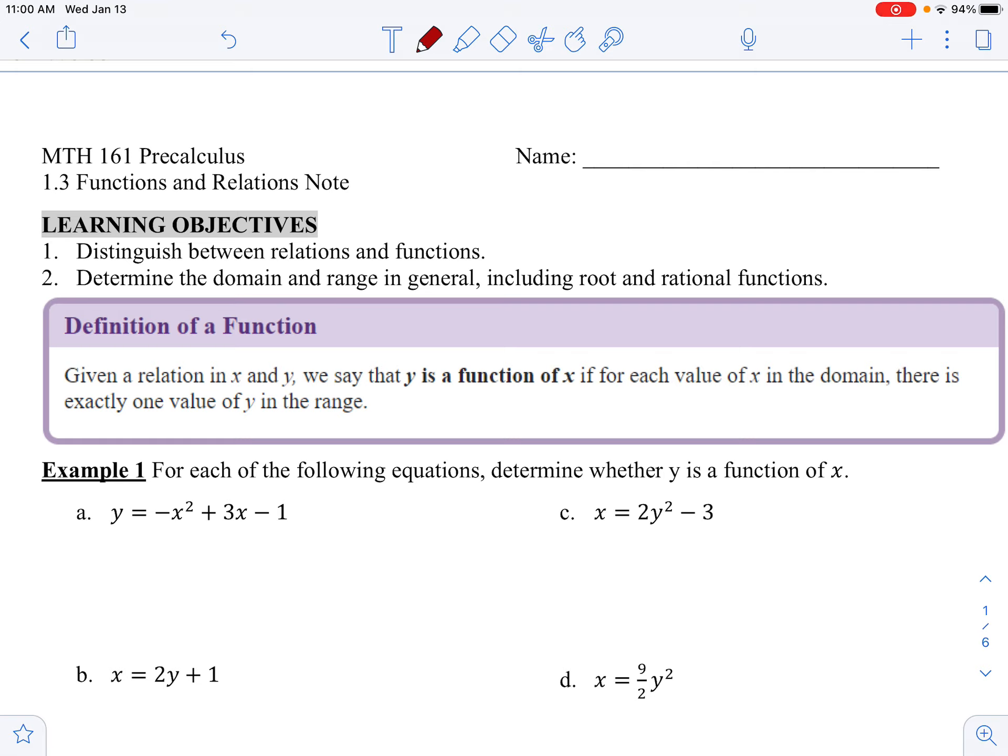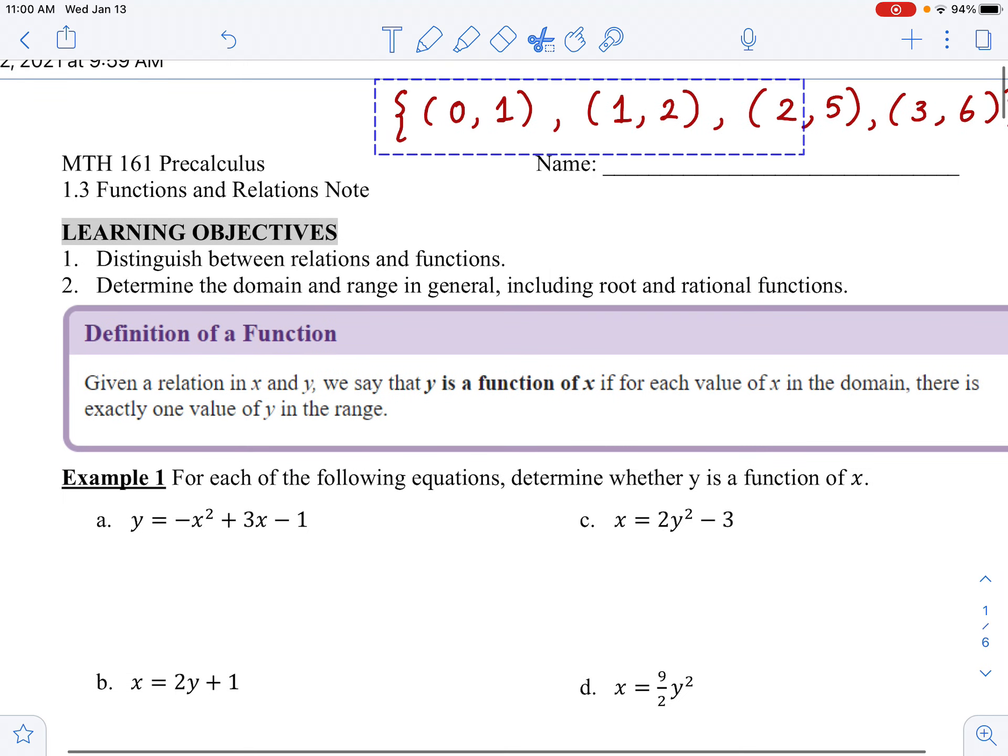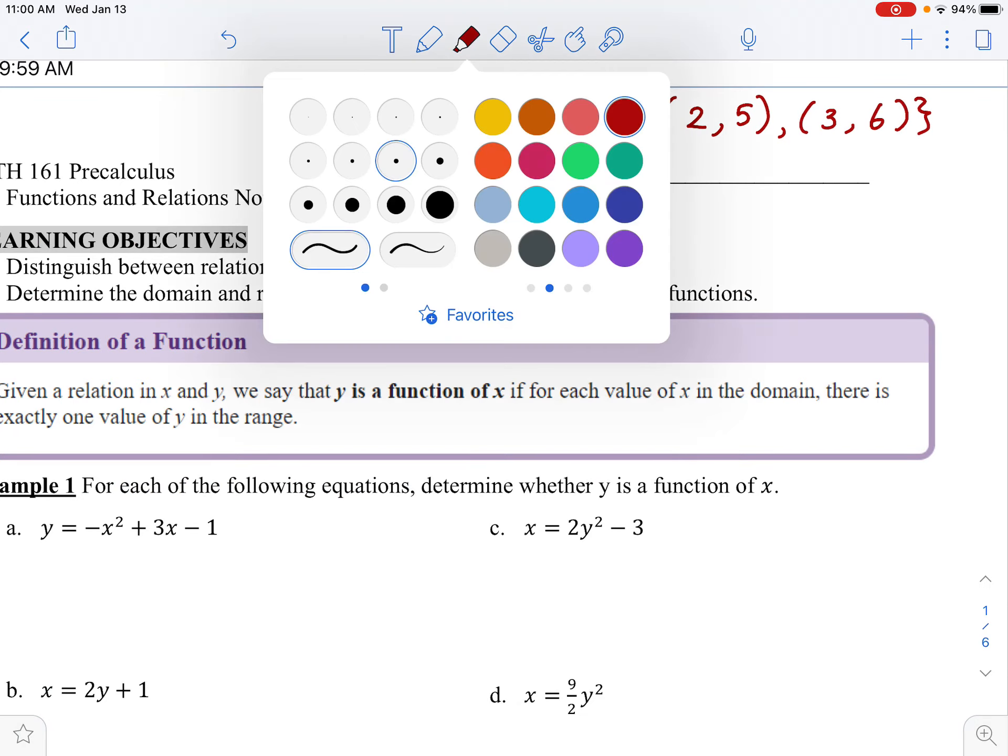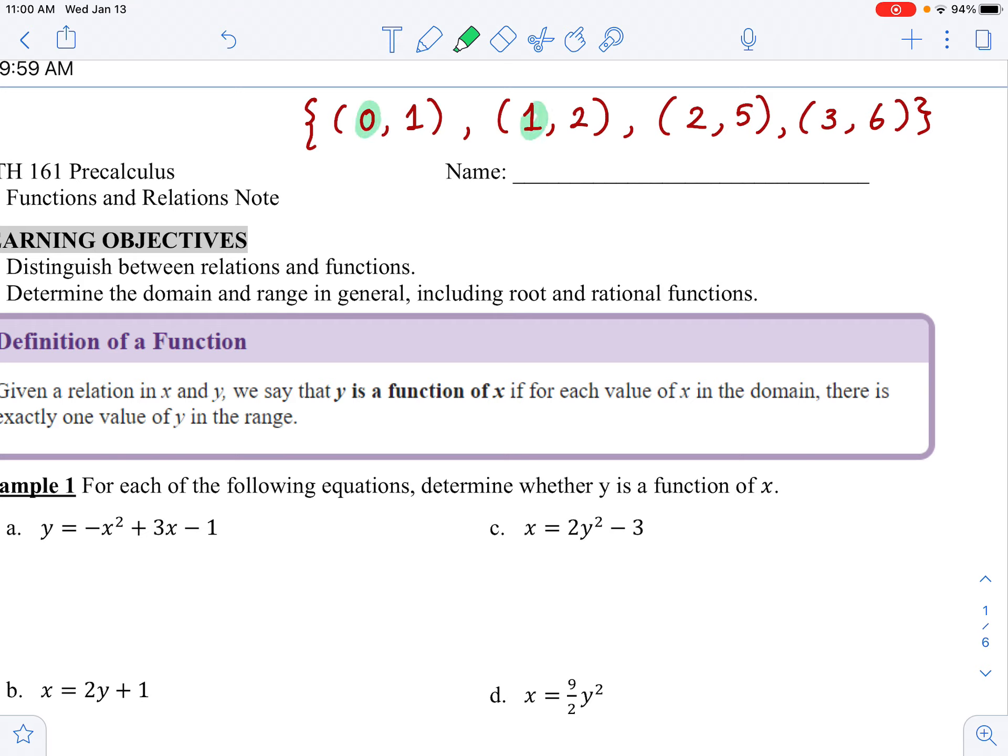A set of ordered pairs, things like (0,1), (1,2), (2,5), (3,6). If you have an ordered pair that looks like this, to see whether this is a function or not, you need to look at all the x values: 0, 1, 2, and 3. Notice they're all different. If you have different x values, if there's no repeating input, an x value, then this is yes, this is a function. Notice that all the x values are different.